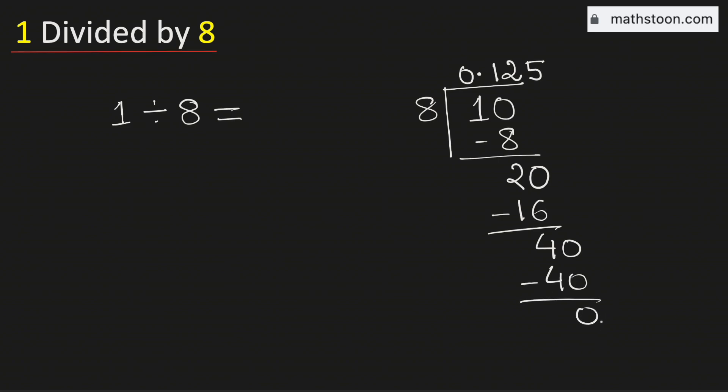As we have obtained the number 0, so we will stop. Therefore 1 divided by 8 is equal to 0.125. And this is our final answer.